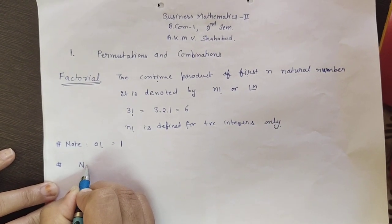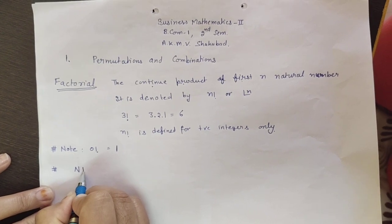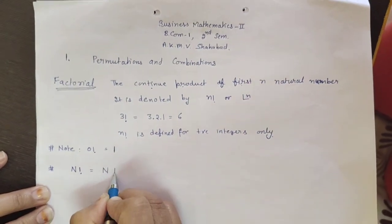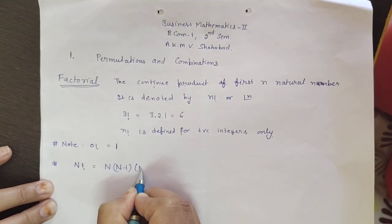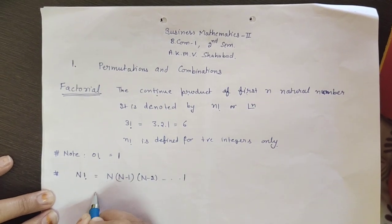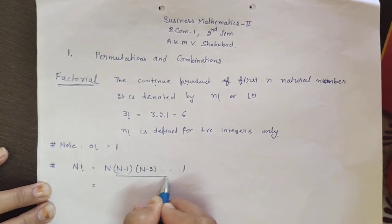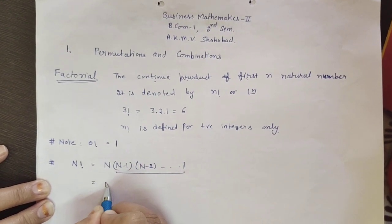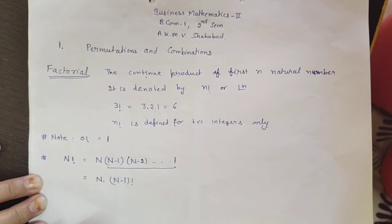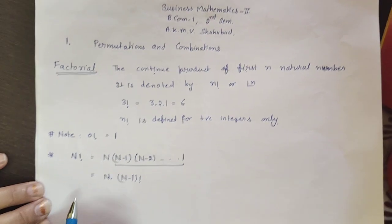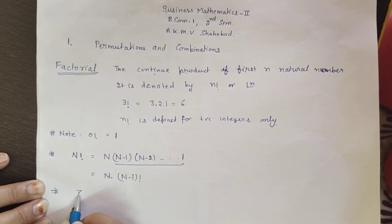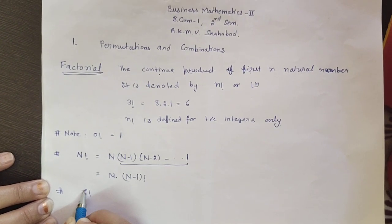If n is a positive integer, then n factorial is defined as n × (n−1) × (n−2) × ... × 1. Using this notation, we can also write n factorial as n × (n−1) factorial. So if we want 6 factorial, we want to calculate the value of 6 factorial.